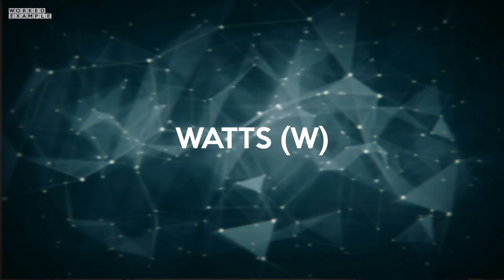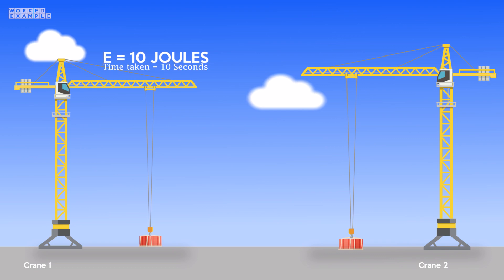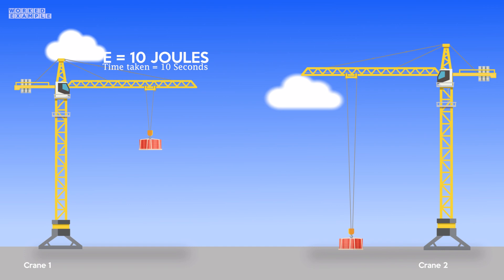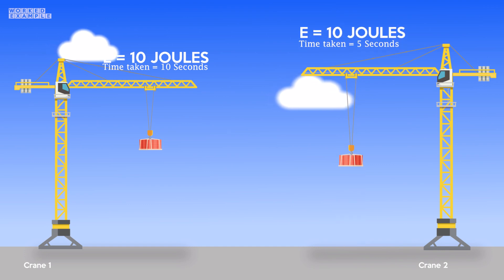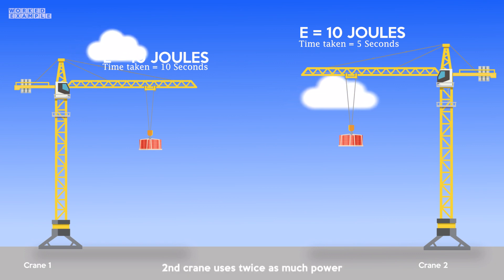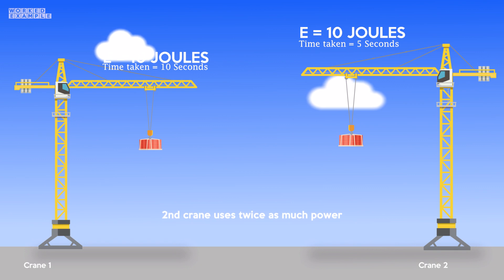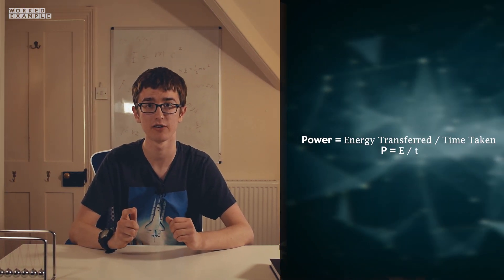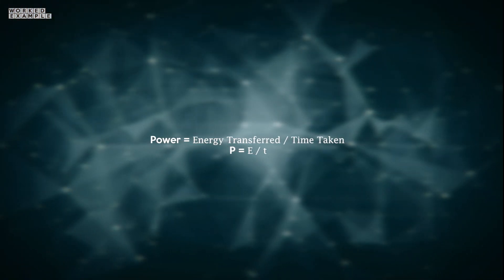Power is the rate at which energy is transferred, and is measured in watts. For instance, if a crane pulls a box up and transfers 10 joules of energy to it as gravitational potential energy in 10 seconds, while another crane also transfers 10 joules of energy to another box but in only 5 seconds, the second crane has a higher power because it transferred the same amount of energy but faster. As an equation, power equals the total energy transferred divided by the time taken to transfer that energy.